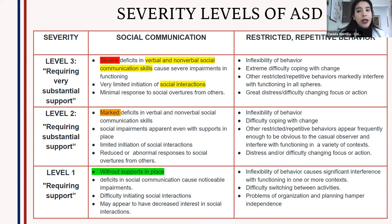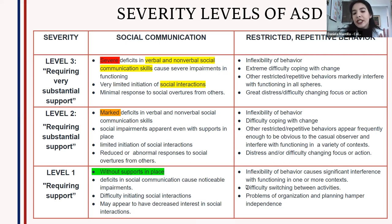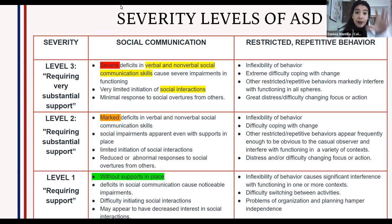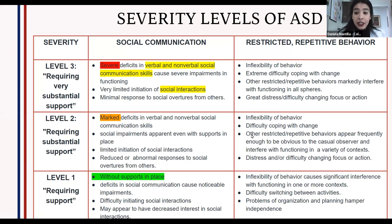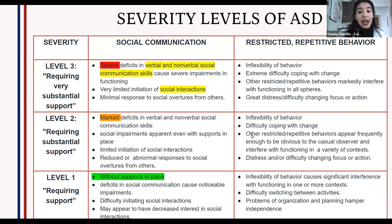Level one is 'requires support.' Without support in place, deficits in social communication cause noticeable impairments, and there is difficulty initiating social interactions with decreased interest in them. For restricted and repetitive behavior, inflexibility causes significant interference with functioning in one or more contexts, along with difficulty switching between activities and problems with organization and planning that hamper independence.